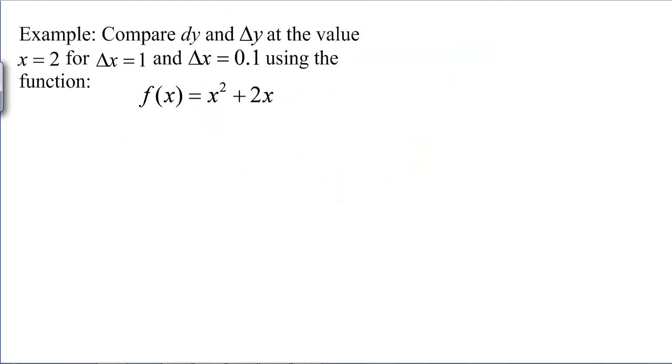Here's an example. It says compare dy and delta y at the value x equals 2 for delta x is 1 and delta x is .01 using the function x squared plus 2x. Now, this is going to be kind of a silly example to use linear approximation on because we can just plug in the numbers. But, in order to actually compare dy to delta y, we need to be able to find delta y which means we need to actually be able to plug in the numbers into our function. Let's try this.